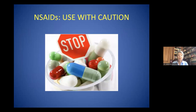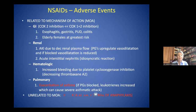You really need to use NSAIDs with caution in all patients. It seems very common to just say 'take some Motrin,' but you really need to explore both the patient's history and propensity for adverse effects. Generally speaking, the lower the dose, the less likely there will be adverse effects. Most adverse events are related to the mechanism of action. Gastrointestinal effects are the most significant class, as NSAIDs inhibit COX-1 and COX-2, and side effects include esophagitis, gastritis, peptic ulcers, and colitis. Elderly females are at greatest risk.